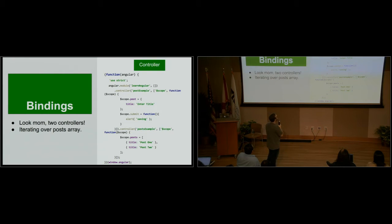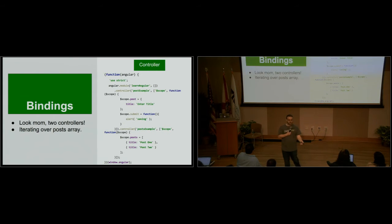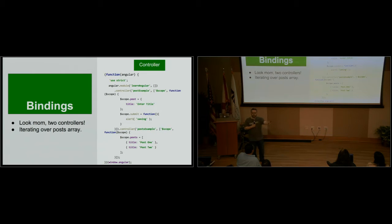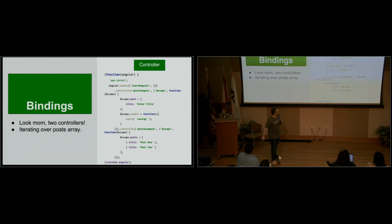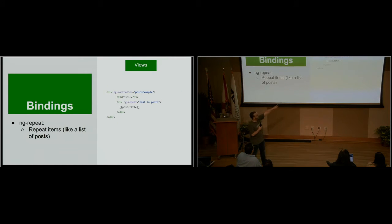Now we have two controllers. This one up here is exactly where we left off — 'postExample.' This one down here is new — 'postsExample.' This is the difference between the archive view in a WordPress theme and the single post view. We have one that's designed to consume lots of posts and show a list, and one that's designed to show details about one post. We're still working with mock data — just an array with title 'Post One,' title 'Post Two.' That's what allows us to loop through and say: I have this array of posts, let's loop through it, treat each one as post — just like a foreach loop in PHP.